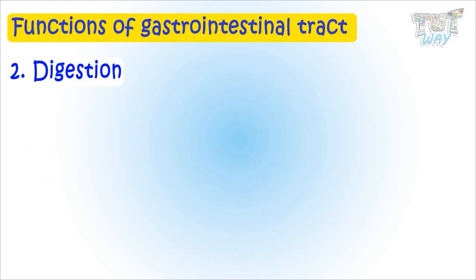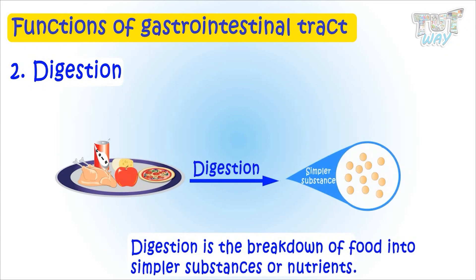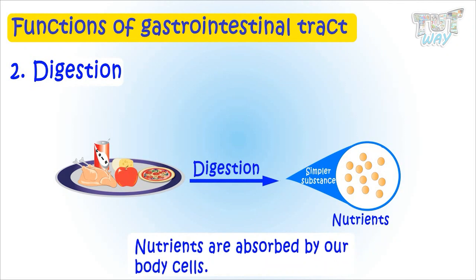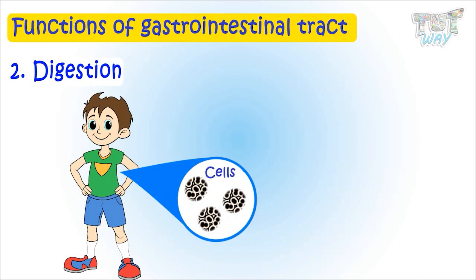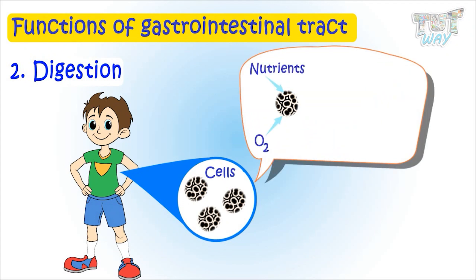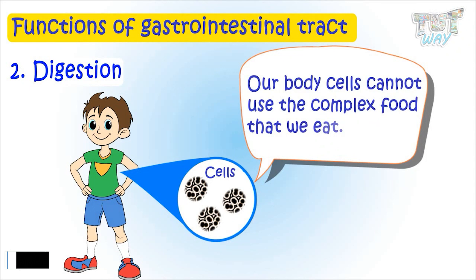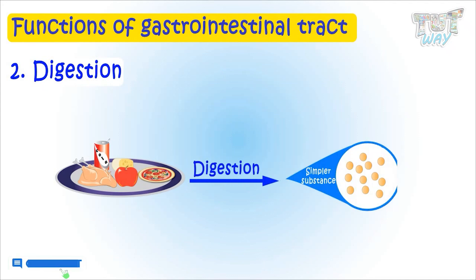Digestion is the most important function of our digestive system — the breaking down of food into simpler substances or nutrients that can be used or absorbed by our body cells. Our body is made up of very small cells that need nutrients for their working. They use oxygen and nutrients to produce energy and release carbon dioxide, and cannot use the complex food that we eat. So the process of digestion creates these nutrients from the food we eat.